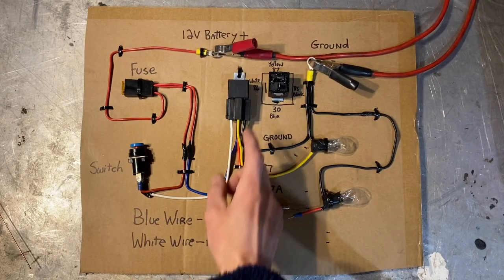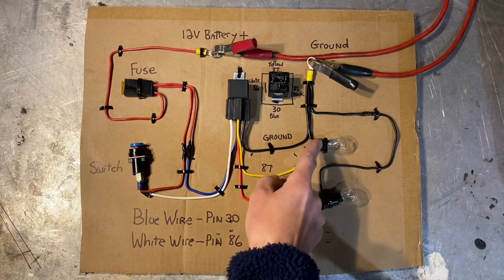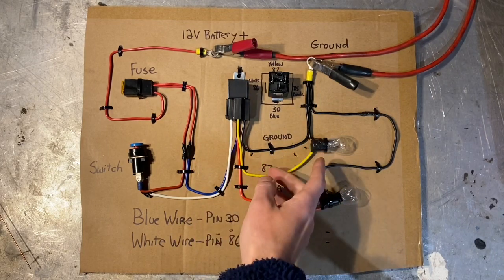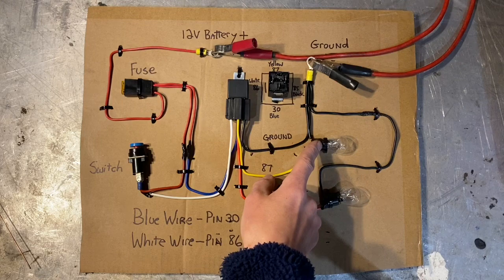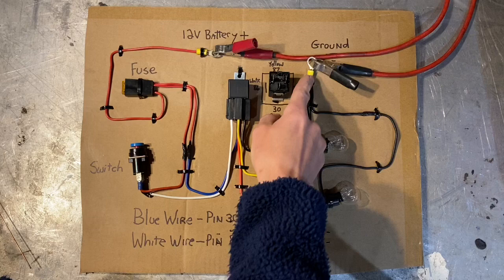Pin 87 is on the opposite side of the relay of pin 30, and it sends power out to your accessory, whether it be a fuel pump or light or whatever. In this case, I just have a bulb hooked up. Your accessory will also need a ground wire coming off of it, which you'll see right here.